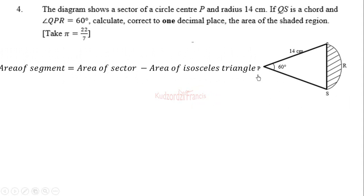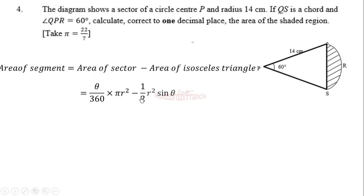The area of the sector is given by theta over 360 degrees times pi r squared, minus the area of the isosceles triangle, which is half r squared sine theta, where theta is the central angle.